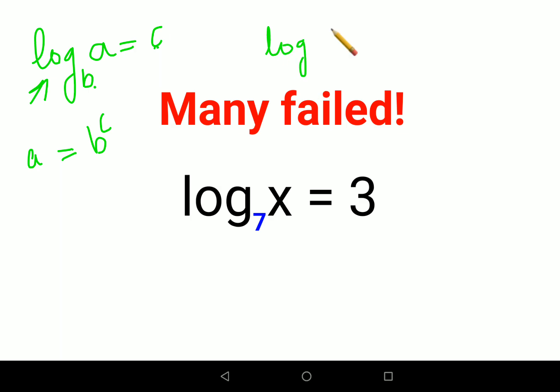So when you have log of 4 to the base 2 equals to k and we need to find the value of k, all you have to do is 4 equals to 2 raised to k. And 4 can be written as 2 raised to 2 equals to 2 raised to k. So from this I can say therefore k is 2.